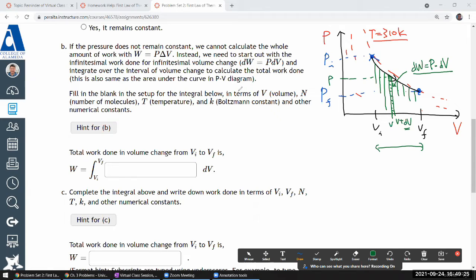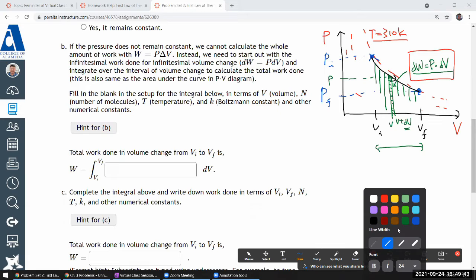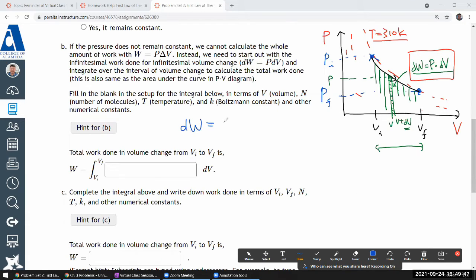So fill in the blank for the setup for the integral below, in terms of volume, number of molecules, temperature, and numerical constants. To start, I would set up this: infinitesimal amount of work done is equal to pressure times the infinitesimal change in volume, dW = P dV. To get the total amount of work done, you would integrate this from initial conditions to final conditions. In terms of the variable V, which is the quantity we've been given, it would be from initial volume to final volume. And here's where you see the problem: this original expression is in terms of pressure, and you don't see pressure anywhere in this problem set.